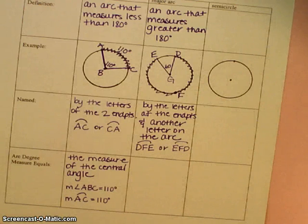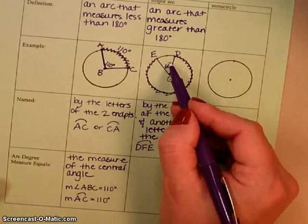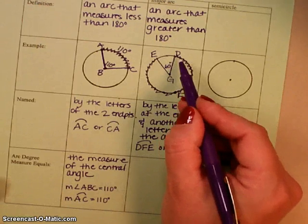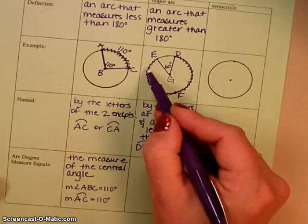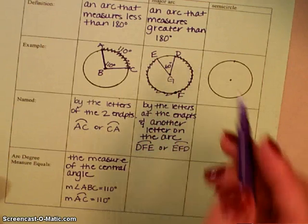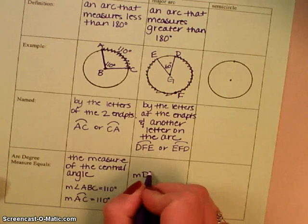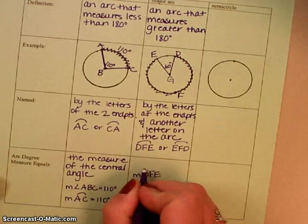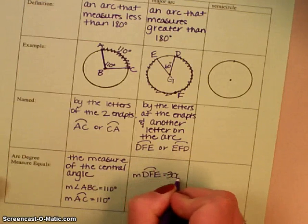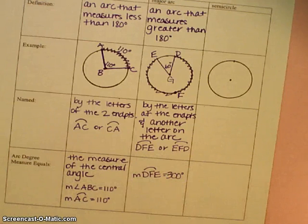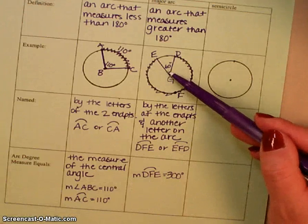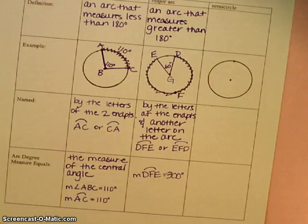As far as the measure, I kind of verbally talked about it. So if this one is 60 degrees, then the measure of this major arc is going to be 300 degrees. So the measure of angle DFE equals 300 degrees. So you can kind of think it is almost like 360 minus the central angle in this case.